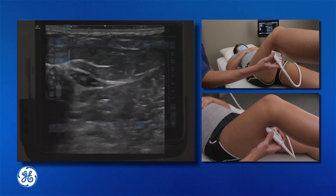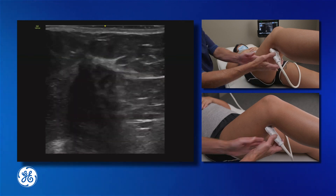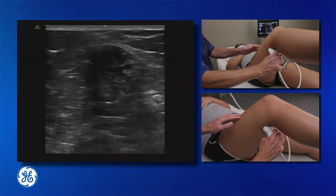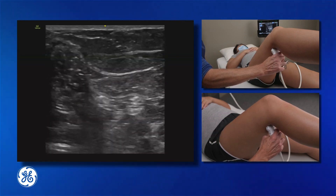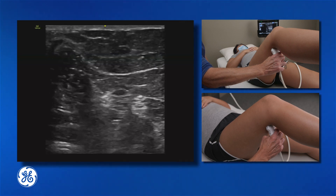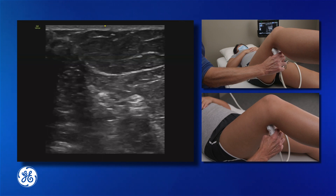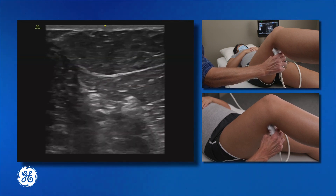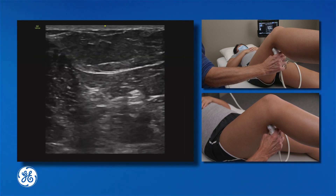We can perform this block in various positions. The model is lying supine with the knee adducted at 90 degrees. Or we can have the patient lying lateral with somebody supporting the leg, with the side being blocked as the leg on top. Or we can prone the patient, depending on what is easiest. We're going to place our probe into the popliteal fossa at the back of the knee.